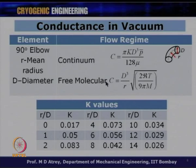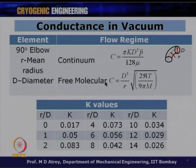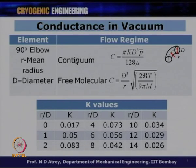In addition to standard pipes and elbows, there are couplings and non-standard items whose conductances must be found from vacuum technology literature. All these conductances are combined to find the overall conductance connecting the vacuum pump to the system to be vacuumed.